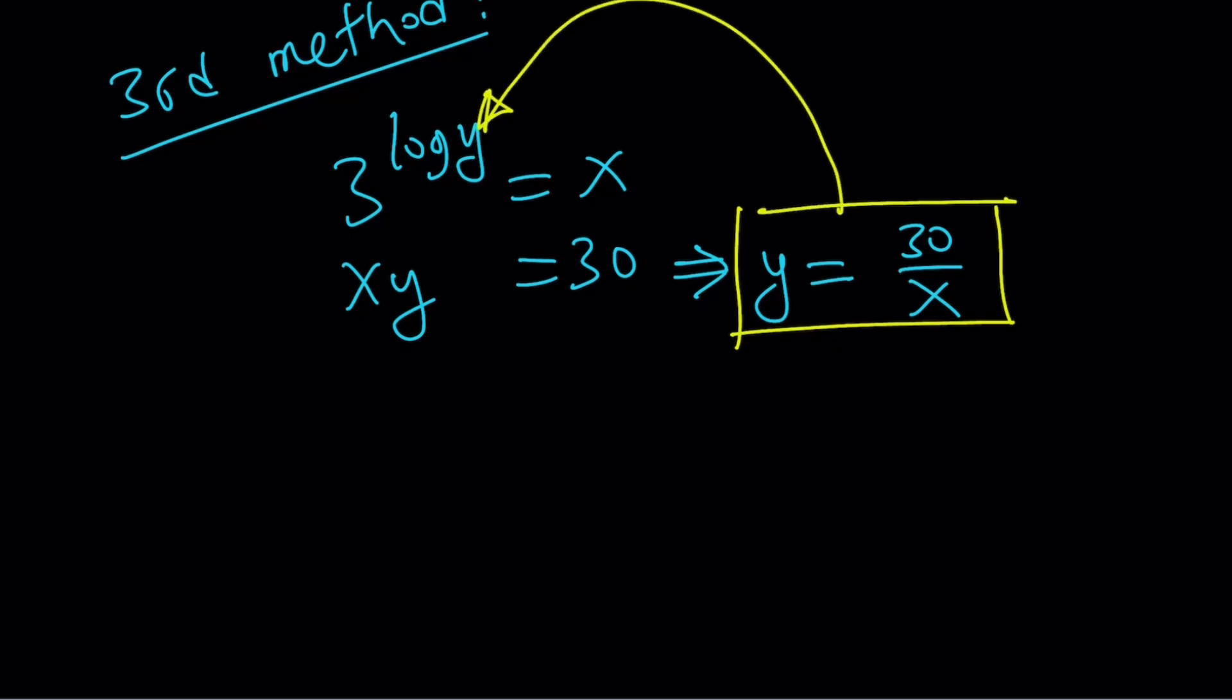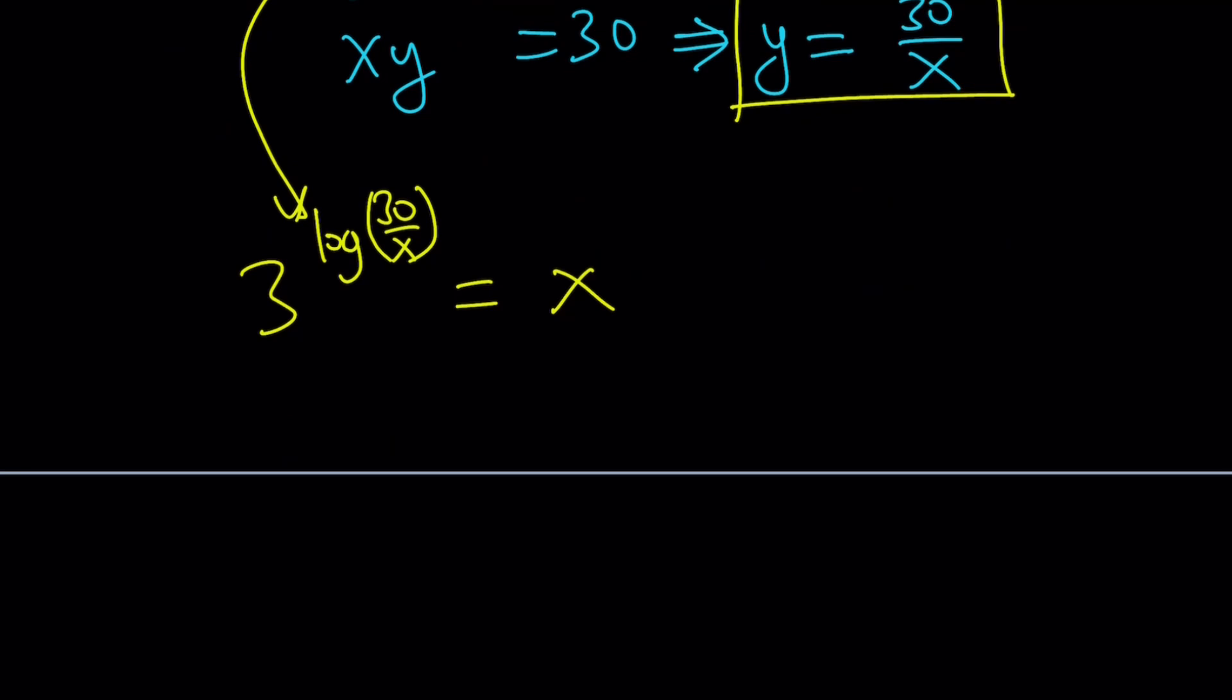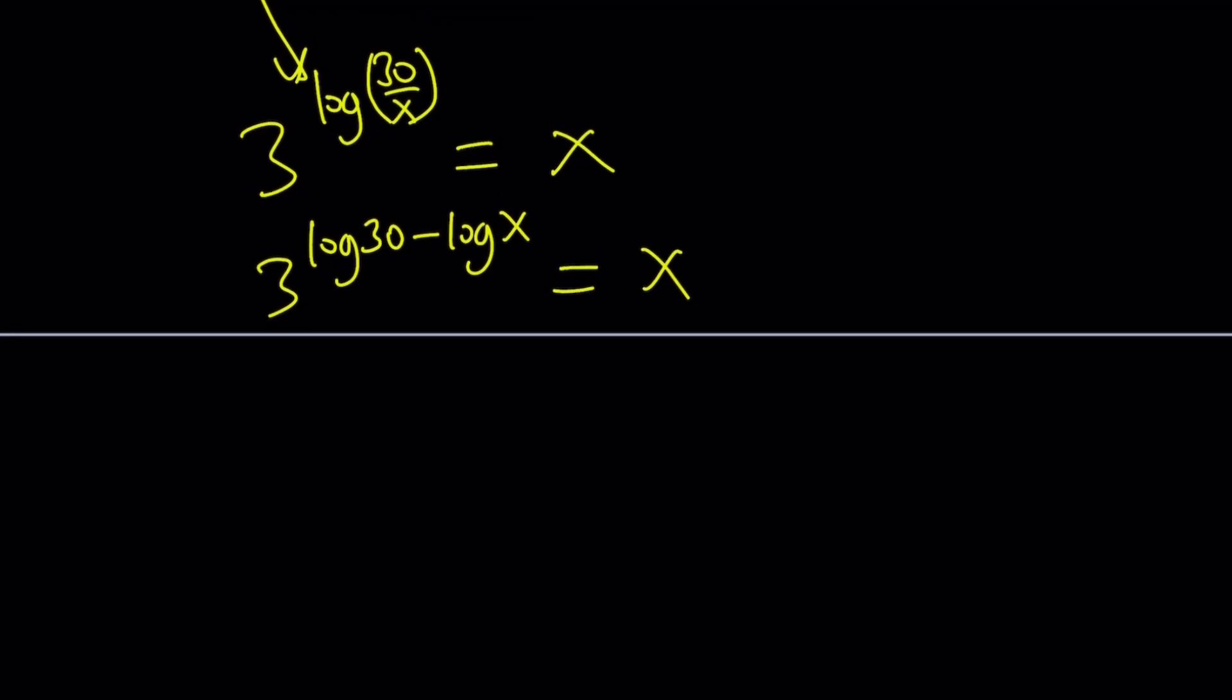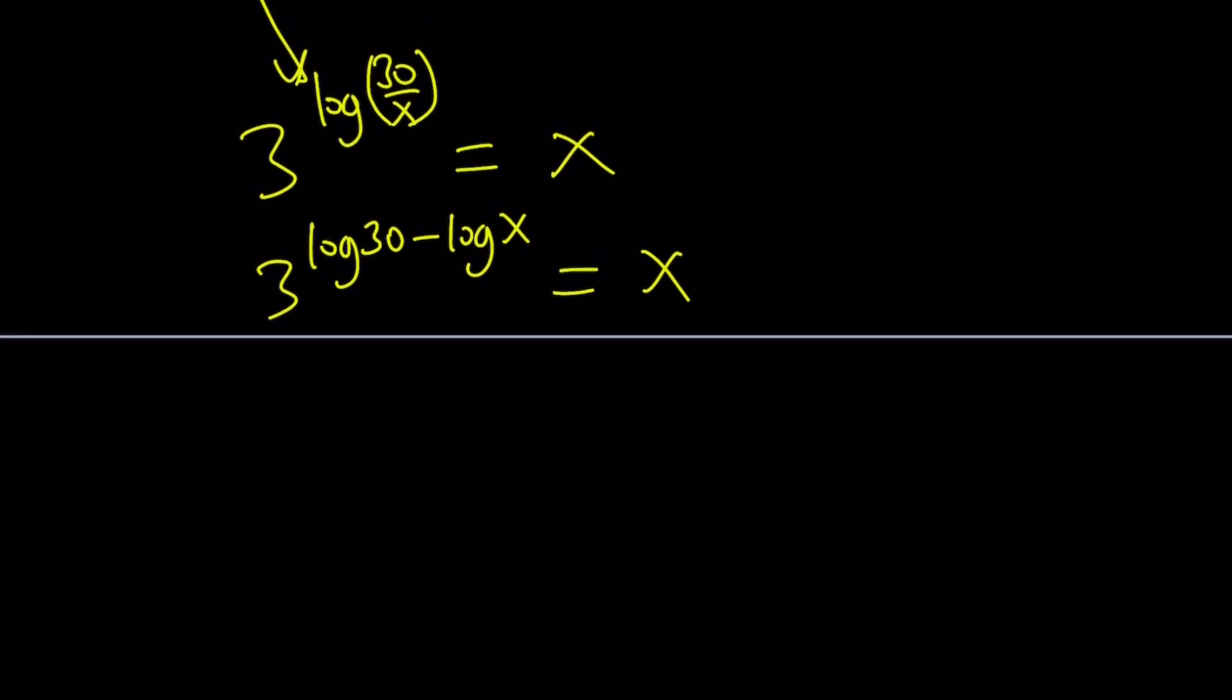So, now we have 3 to the power log y but replace y with 30 over x like this, put parentheses and that equals x. You like this equation? Maybe you don't but that's okay. We'll simplify it a little bit so bear with me. I'm going to write this as, first of all, I have the log of a quotient so I can basically write it as a difference of two logs. Properties of logs again. We haven't logged both sides. We just substituted. Now, how do I simplify this? Something that I can do basically is, I can just write this as a quotient.